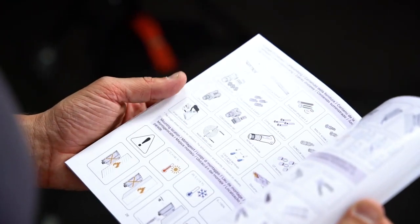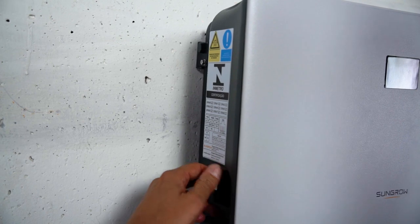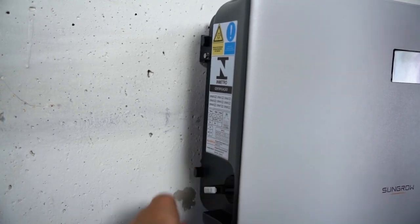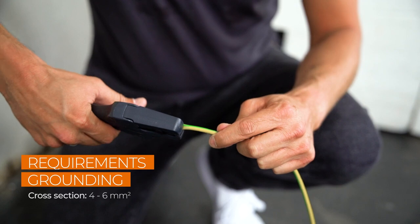Furthermore, you have to set the DC switch at the bottom of the inverter to OFF. Now let's continue with the installation.